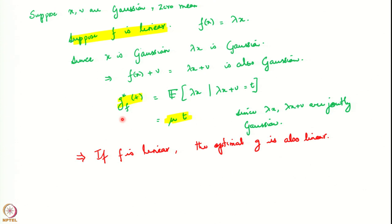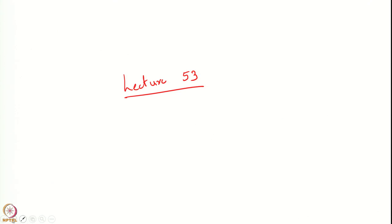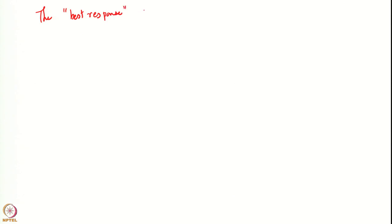We are just proposing that suppose f is linear and asking what is the optimal g, and it turns out that the optimal g is also a linear function. What this suggests is that the best response g to a linear f is also linear.